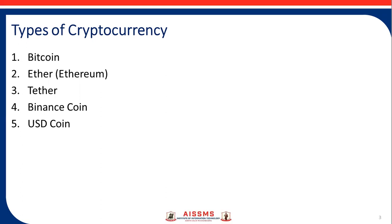Ethereum is both a cryptocurrency and a software development sandbox. Next is Tether. Tether is a stable coin, or a currency tied to a fiat currency — in this case, the US dollar. The idea behind Tether is to combine the benefits of cryptocurrency with the stability of currency issued by a sovereign government.